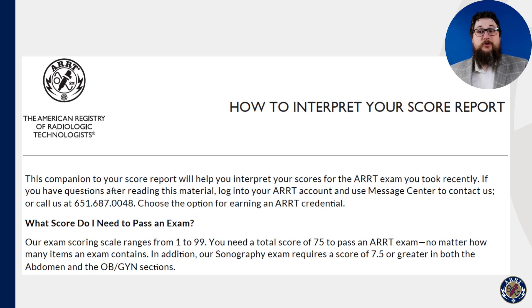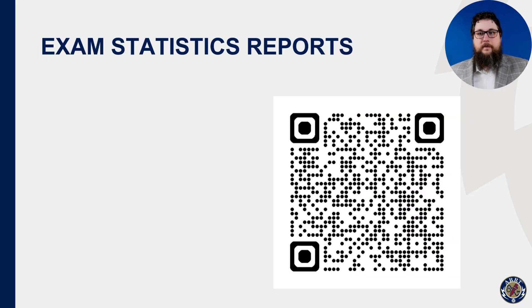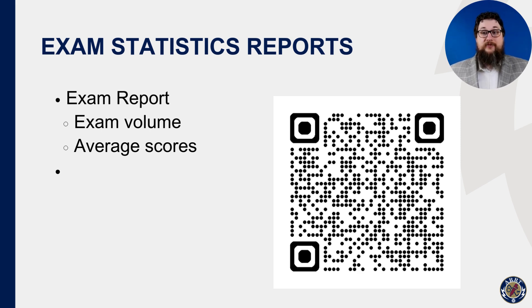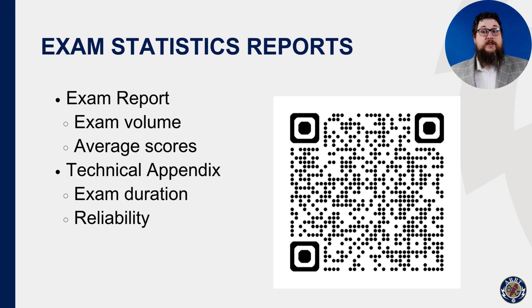If you have further questions or want to review the score report values again, consult the interpretation guide that came with the score report — it covers much of the same material and should help plan for future attempts. If you want to know more about our exams, please look for the exam statistics report on the ARRT website. The exam report contains a wealth of information about exam volume and average scores for every discipline. The technical appendix covers the scaled score calculation in detail with another example, as well as the exam time limits, reliability, and more.